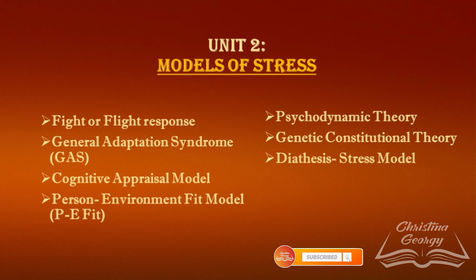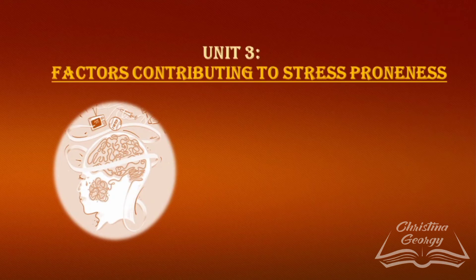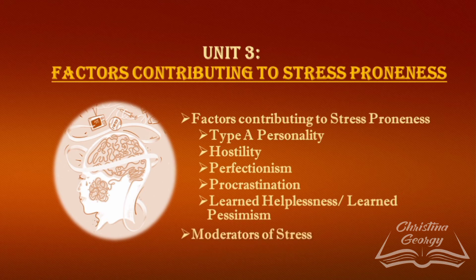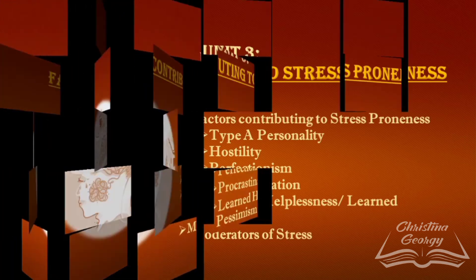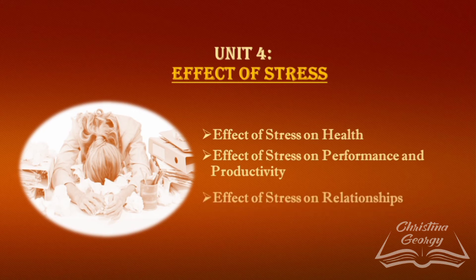We'll also study the psychodynamic model, along with the genetic constitutional theory and the diathesis-stress model. Unit 3 is titled 'Factors Contributing to Stress Proneness' and covers Type A personality aspects such as hostility, perfectionism, procrastination, and learned pessimism or helplessness, as well as the moderators of stress. Unit 4 highlights the effects of stress — mainly on health, performance and productivity, and relationships.